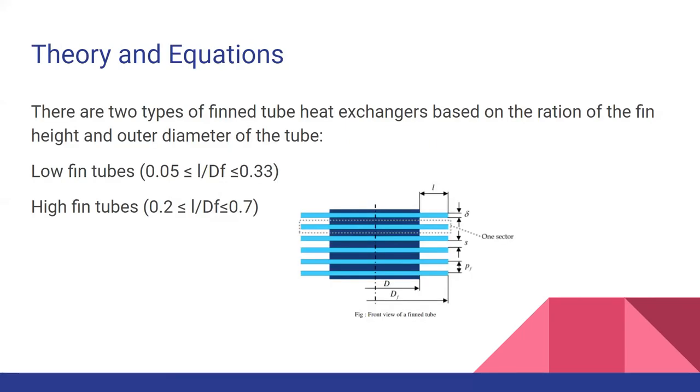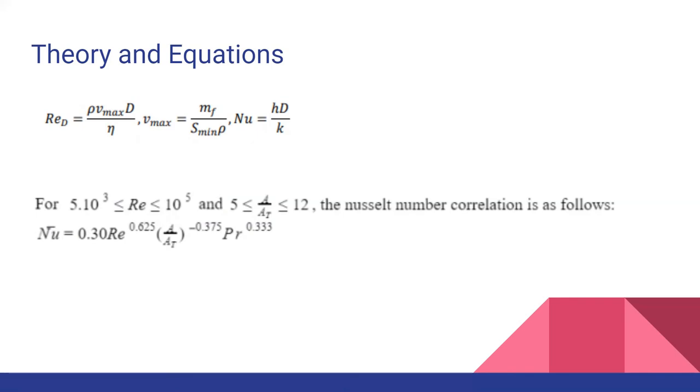Now let's come into what equations we have used. Firstly, there are two types of fin tube heat exchanger on the basis of ratio of fin height and outer diameter. One is the low fin tubes and another is high fin tubes. For low fin tubes, the ratio of the height of the fin tube which is L as you can see from the diagram and the diameter of the outer fin is between 0.05 to 0.33. But for high fin tubes, the L by DF ratio is 0.2 to 0.7. The low fin tubes are mostly carved out in the tube itself and there is no need to use extra material for it. But for high fin tubes, extra material is used. In our case, we are using a high fin tube heat exchanger.